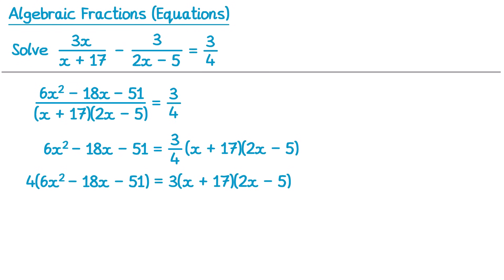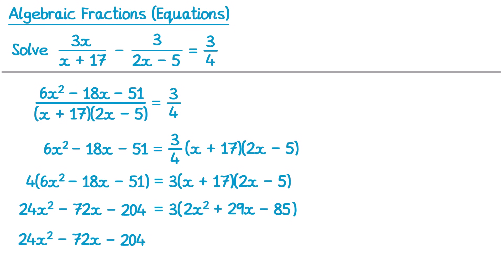Now we've got lots of expanding to do. On the left hand side we multiply by 4: 4 lots of 6x squared is 24x squared, 4 lots of negative 18x is negative 72x, and 4 lots of negative 51 is negative 204. Then on the right hand side we write a 3 and expand the double bracket inside it. We've got x times 2x first that's 2x squared, then x times negative 5 is negative 5x, but also 17 times 2x is positive 34x — so negative 5x plus 34x is positive 29x — and finally 17 multiplied by negative 5 is negative 85. Then multiplying by 3: 3 lots of 2x squared is 6x squared, 3 lots of 29x is 87x, and 3 lots of negative 85 is negative 255.